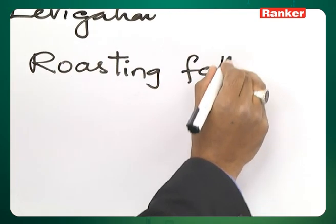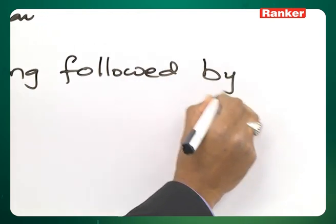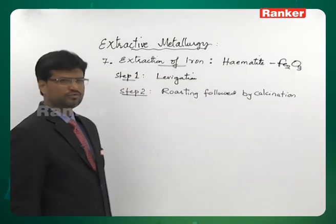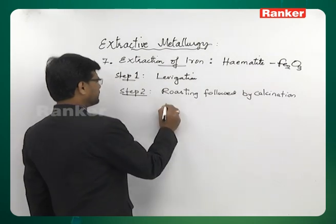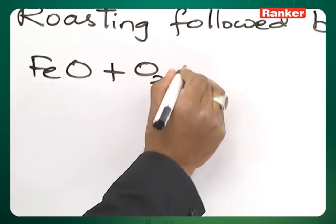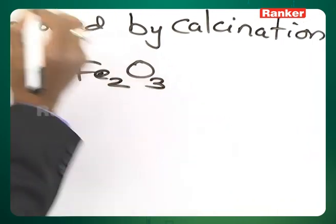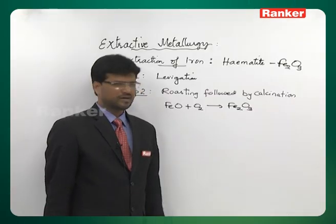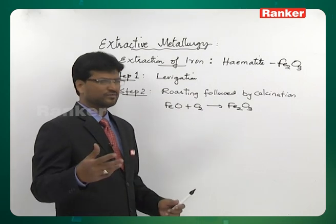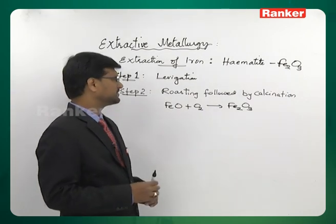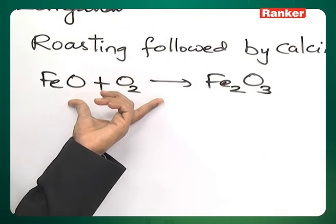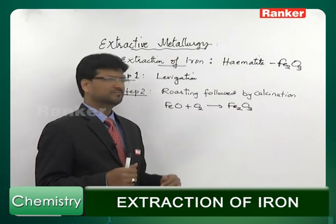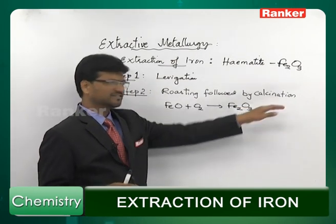Step 2 is Roasting followed by Calcination. Roasting is done with the purpose of transforming all the ferrous oxide into ferric oxide. Apart from this, you lose moisture and volatile impurities. Once all the ferrous oxide is transformed into ferric oxide, cut the supply of air and continue heating so that all volatile substances are lost — this stage is called calcination.